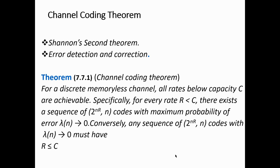In the case where the signal generation rate R is greater than the channel capacity C, the probability of getting an error in the channel will become high, and the reconstruction of the signal at the receiving end will be difficult. This theorem is called Shannon's second theorem, also known as the channel coding theorem.